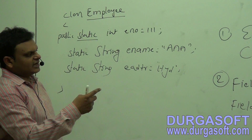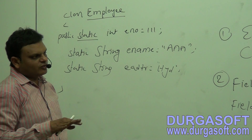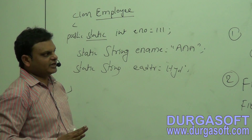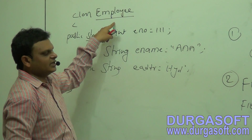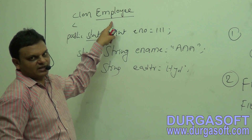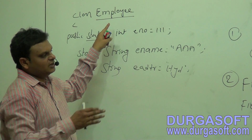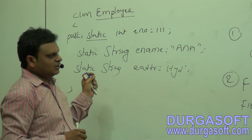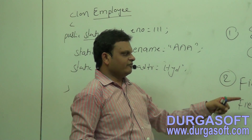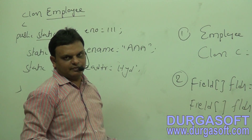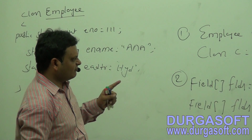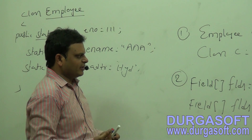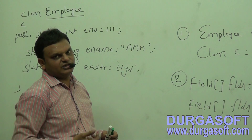In the case of getDeclaredFields(), we are not going to get data from the superclass. We are going to get only the variables metadata which are available in the corresponding class, irrespective of whether those variables are declared as public or not. By using either of these methods, we are able to get a field array.